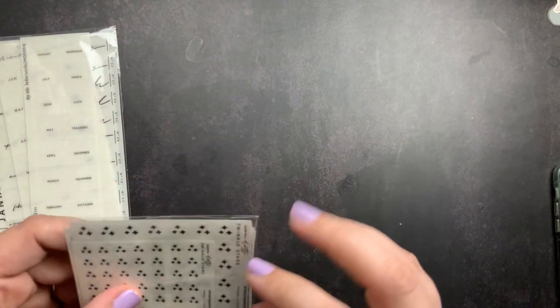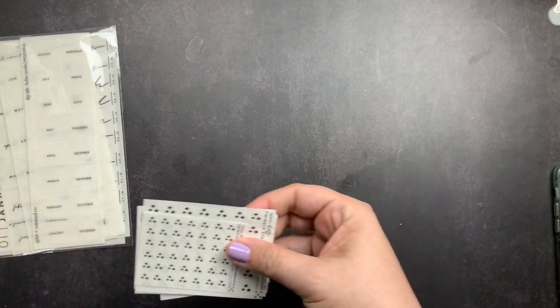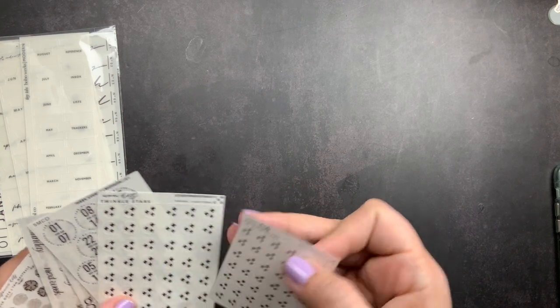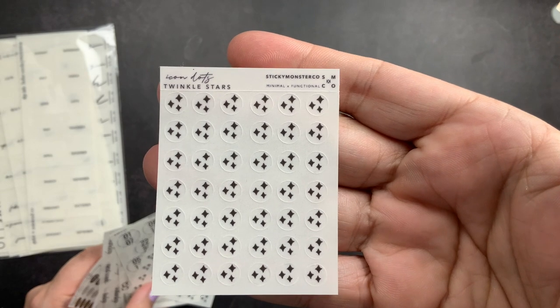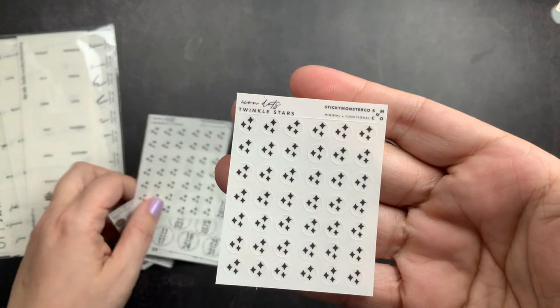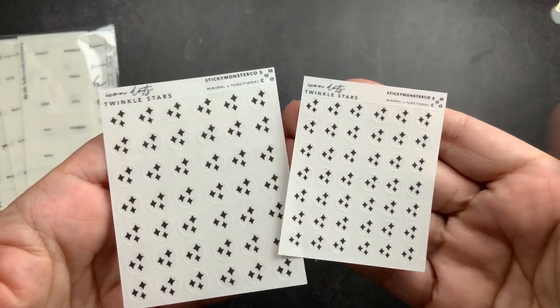So let's start with the little package. These are stickers. Some of these are freebies and then some of these are things that I ordered. So I did get these twinkle stars. These are in their icon dot line, but I liked them a lot. And so I got them in two different sizes, so a smaller one and a larger one.